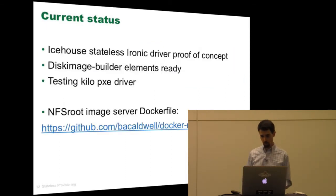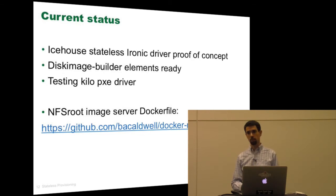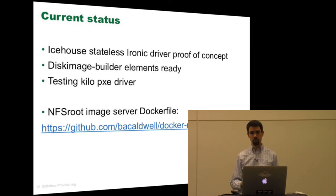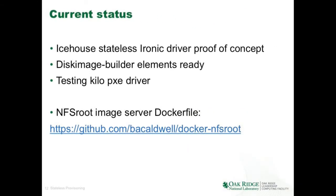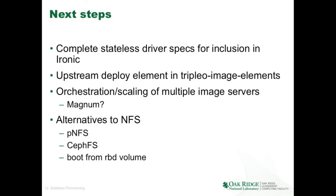Current status: we completed a proof of concept that worked with Icehouse. We had problems with Ironic in Icehouse around reliability and locking, but those concerns have been addressed for the most part, so we're moving this to Kilo to deploy in a production capacity. We're beginning testing with that next, and I've put the Dockerfile to create this NFS root image server out on GitHub. The pieces remaining — the next steps — we need to get the stateless driver integrated into Ironic in some capacity. This might be another deploy driver in addition to the PXE and agent methods. We also need to upstream our deploy element from disk-image-builder — the logical place for that is the TripleO image elements.